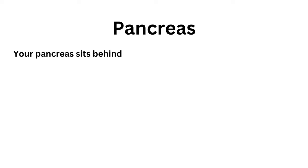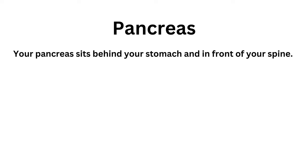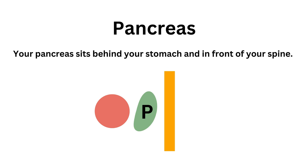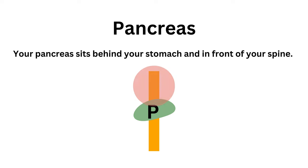Your pancreas sits behind your stomach and in front of your spine. So if this is your spine and this is your stomach, your pancreas sits right here in between your stomach and your spine. Which means if you are to look at the pancreas from the front, like if your professor asks you to locate the pancreas in the anatomy lab, you're going to have to lift the stomach up in order to visualize the pancreas.